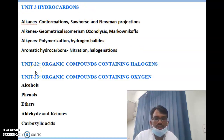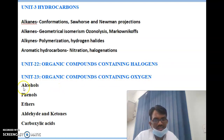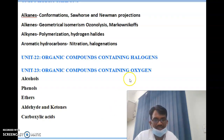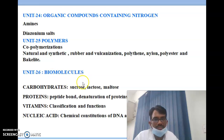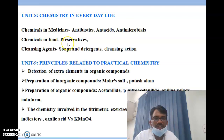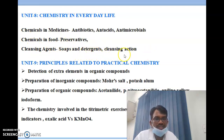Unit 4 covers organic compounds containing halogens. Unit 5 covers organic compounds containing oxygen — alcohols, phenols, ethers, aldehydes, ketones, and carboxylic acids. Unit 6 covers organic compounds containing nitrogen — amines and diazonium salts. Additional units cover polymers, biomolecules such as carbohydrates, proteins, vitamins and nucleic acids, and chemistry in everyday life — medicines, food, cleaning agents, soaps, and detergents.